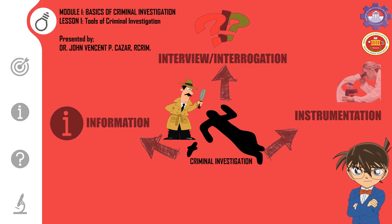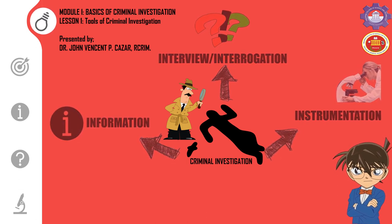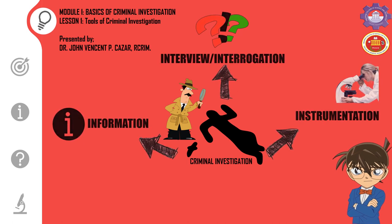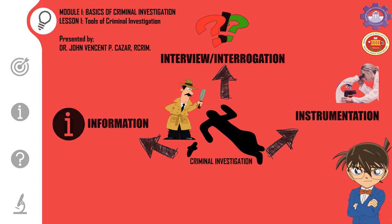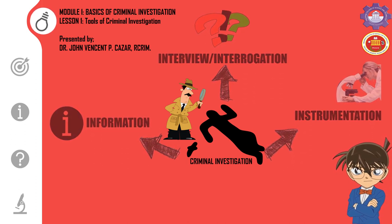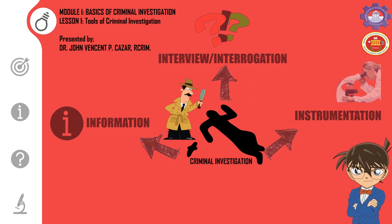Applying this principle to the criminal realm, a criminal investigation refers to the process of collecting information or evidence about a crime in order to determine if a crime has been committed, identify the perpetrator, apprehend the perpetrator, and provide evidence to support the conviction in court. If the first three objectives are successfully attained, then the crime can be said to be solved. Several other outcomes such as recovering stolen property, deterring individuals from engaging in criminal behaviors, and satisfying crime victims have also been associated in the process.